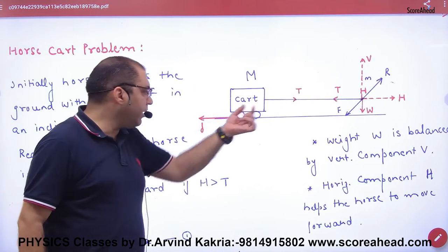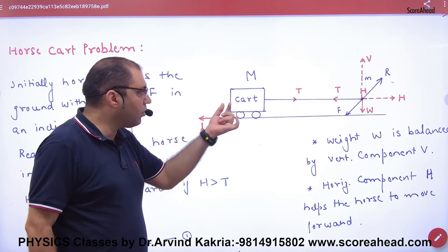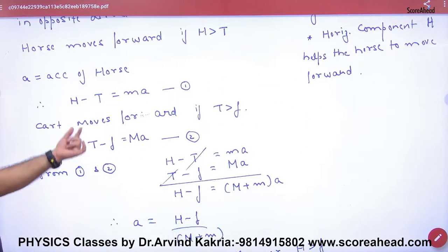Next, T minus f equals capital M times a. So T - f = Ma. This is your second equation.